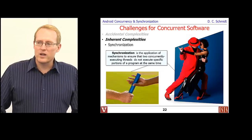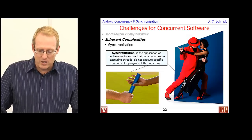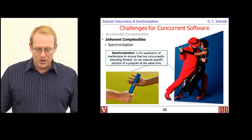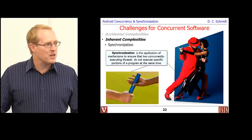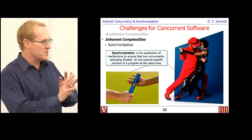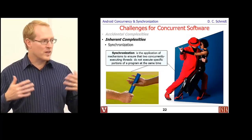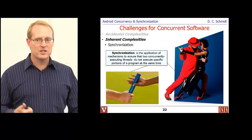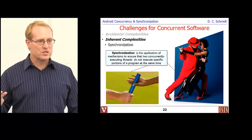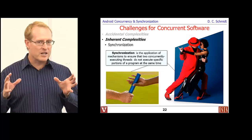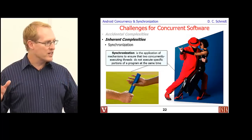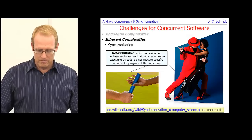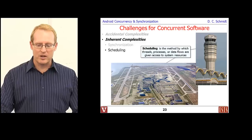One essential complexity is synchronization — the application of mechanisms to ensure that two or more concurrently executing threads don't try to execute the same piece of code accessing the same data at the same time without protection. Various locking mechanisms like mutexes, reader-writer locks, and semaphores are used to coordinate access to shared resources.